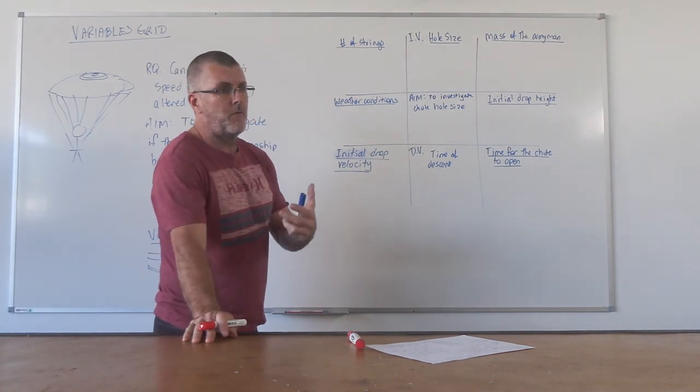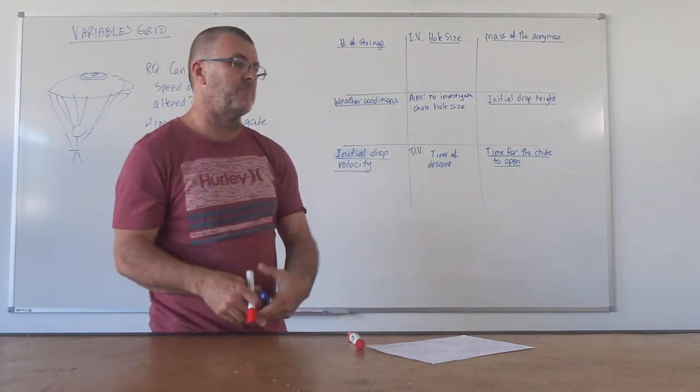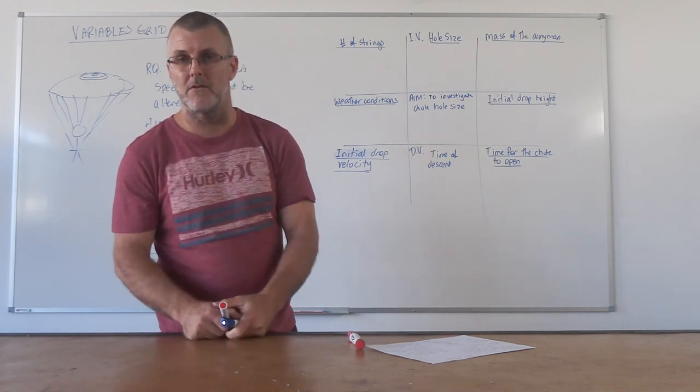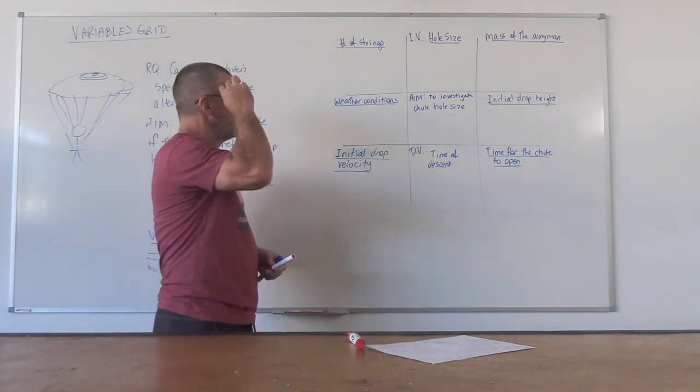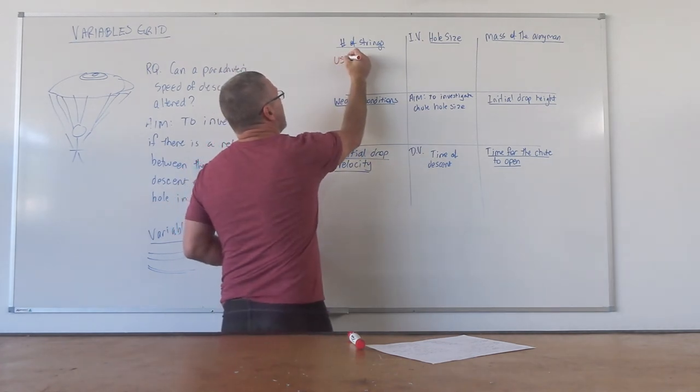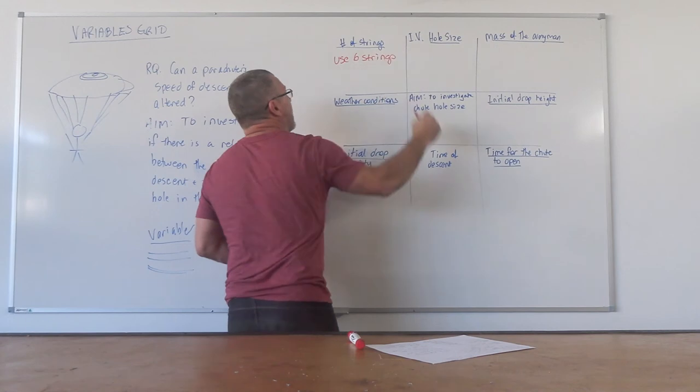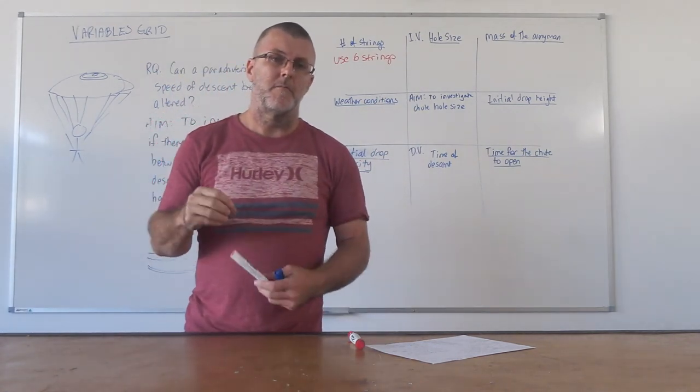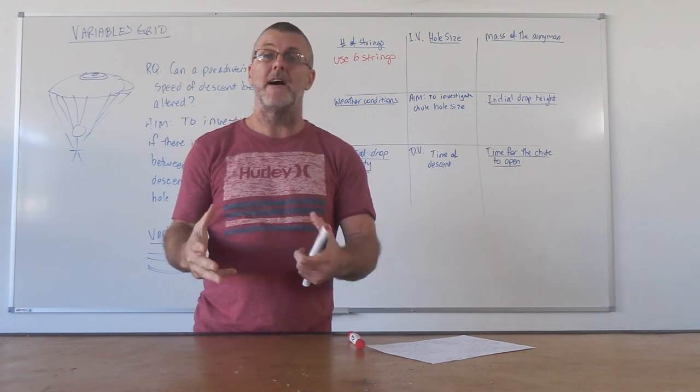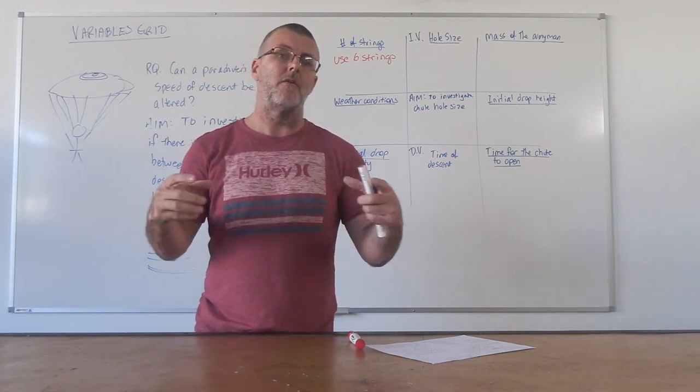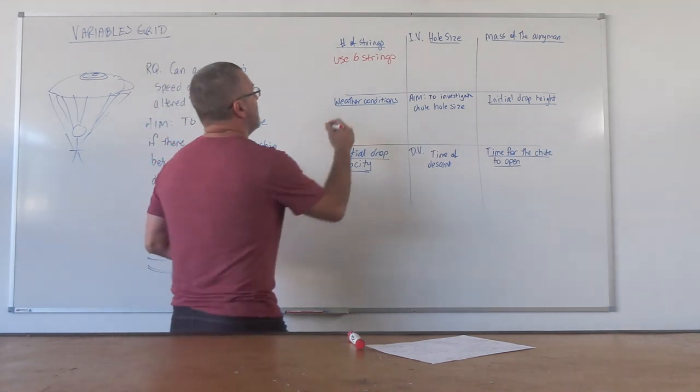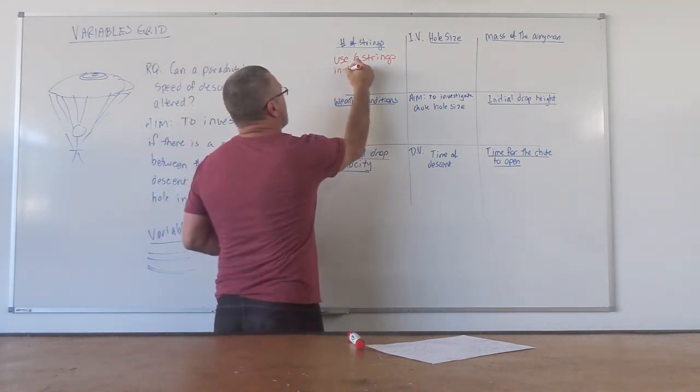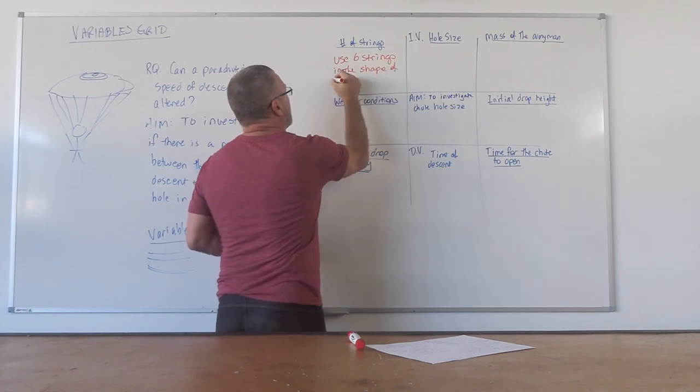So the number of strings, what we're going to do in here - we might do some research and we might find out that you could have anywhere between, say four strings and 12 strings or whatever. And as a student, you might decide, we're going to pick six strings. Let's go sort of somewhere between six or eight strings. But in this case, I'm going to pick six strings. So I'm going to use six strings. And not only am I going to use six strings, but those six strings are going to be attached in the shape of a hexagon. I'm not going to attach them where I've got three on one side, three on the other. I'm going to distribute them evenly around my parachute. Use six strings in the shape of a hexagon for attachment.